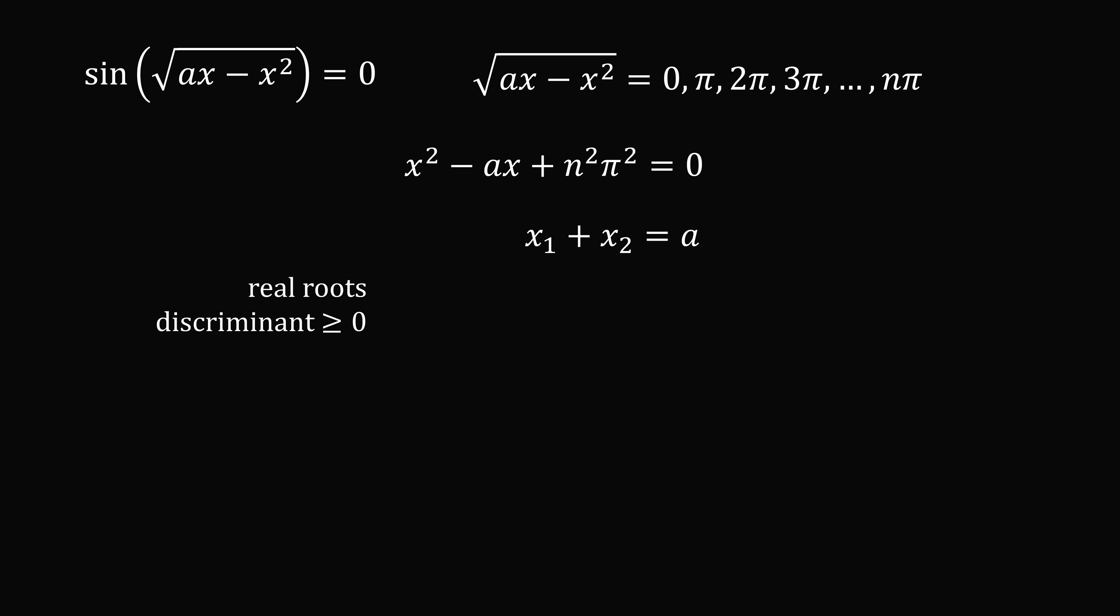Furthermore, we need real roots for this equation. That means the discriminant has to be greater than or equal to 0. So the discriminant will be this term squared, minus 4 times this coefficient times this coefficient, and that works out to be a squared minus 4n squared pi squared, and we need this to be greater than or equal to 0.